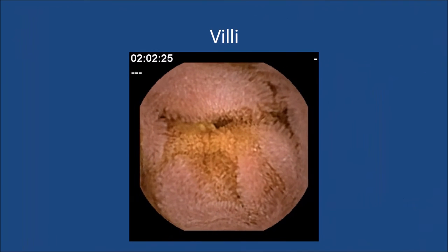We'll then move on to cover findings that are considered normal in capsule endoscopy. We'll demonstrate findings all along the GI tract, including villi, air bubbles, and folds.